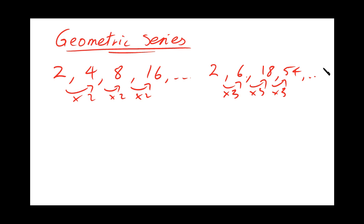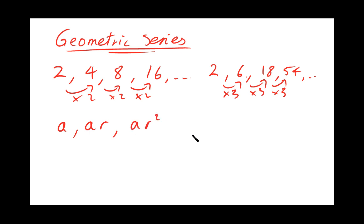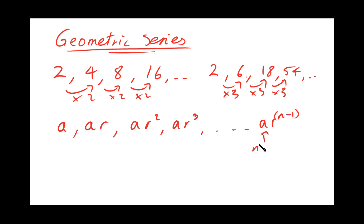So let's try and get a general form for that. Let's call our first term A. The next term — we're multiplying by 2 here, or by 3 there — so if we call the multiplying factor R, the next term will be A times R. The term after that will be A times R squared, then A times R cubed, and so on. If we go all the way up to the nth term, we'll realise the power is one less than the term number, so we get AR to the n minus 1.